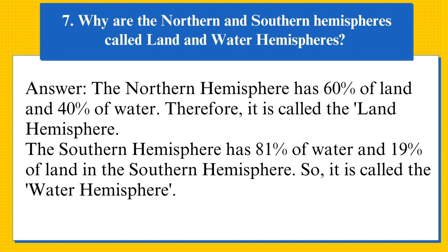Next question: why are the northern and southern hemispheres called land and water hemispheres? The northern hemisphere has 60% of land and 40% of water. Therefore, it is called the land hemisphere. The southern hemisphere has 81% of water and 19% of land. So, it is called the water hemisphere.